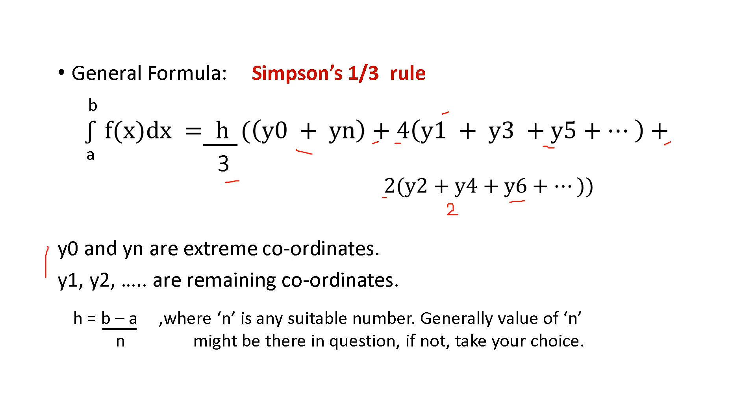Here y0 and yn are the extreme coordinates. Y0 is the first coordinate of y and yn is the last coordinate of y. And the others, y1, y2 etc, they are the remaining coordinates. And here one h is there. To find h, the formula used is h is equal to b minus a by n.